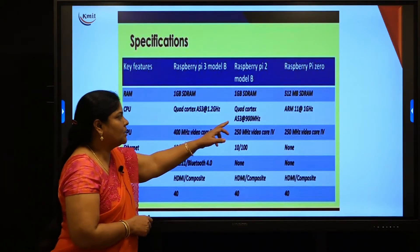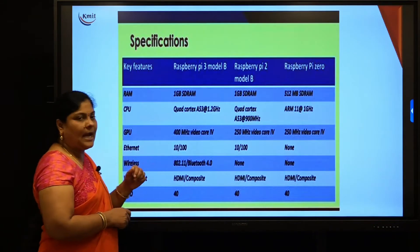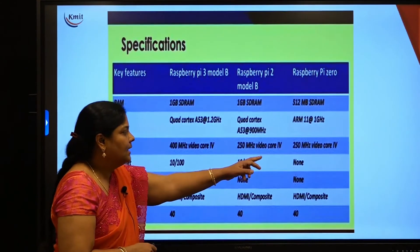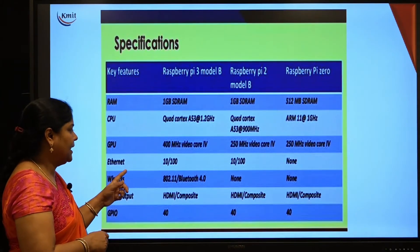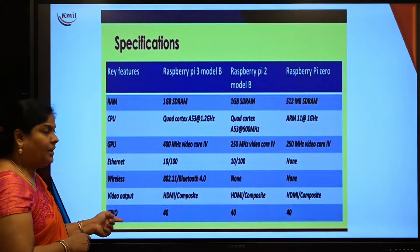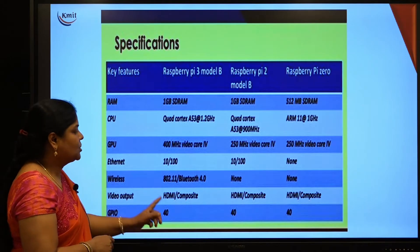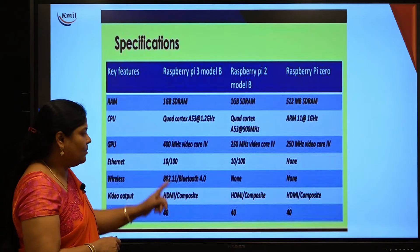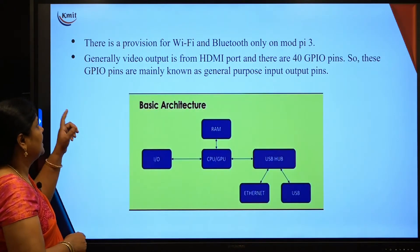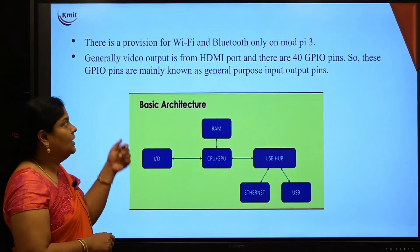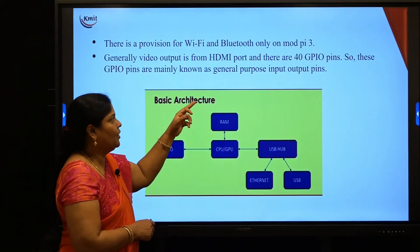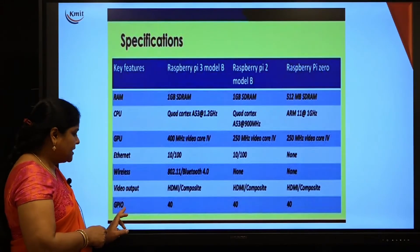For CPU, Raspberry Pi 3 and 2 use a quad-core processor, while Raspberry Pi 0 uses an ARM microprocessor. GPU is 400 MHz for Raspberry Pi 3, and 250 MHz for both Raspberry Pi 2 and Pi 0. All boards have the same 40 GPIO pins regardless of model. Wi-Fi and Bluetooth are provided only in Raspberry Pi 3. Video output is through the HDMI port.